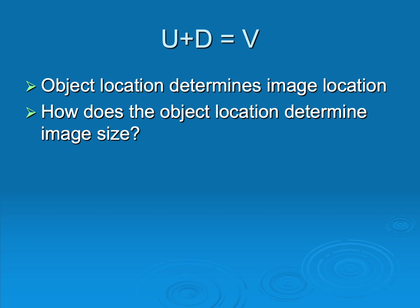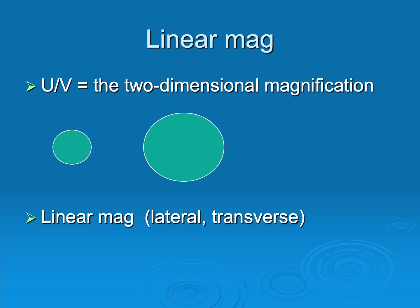We've already figured out that U plus D equal V means object location determines image location. But how does it determine size? It turns out that U over V gives us that two-dimensional magnification we saw in the golfing photograph — magnification by height and width. There are also synonyms you should be aware of: lateral magnification, transverse magnification, and linear magnification. It's all the same stuff.